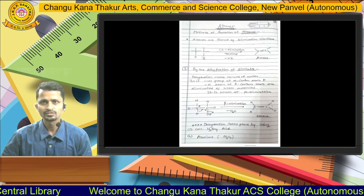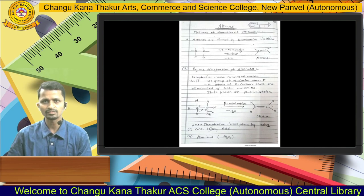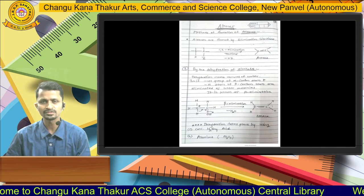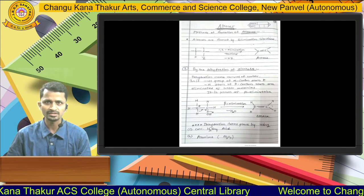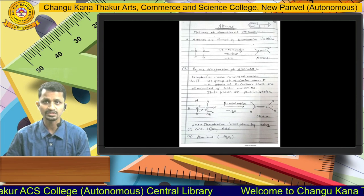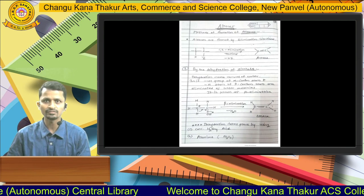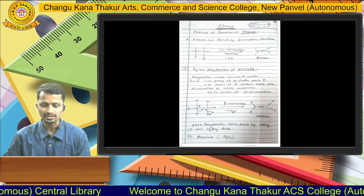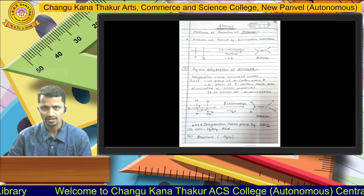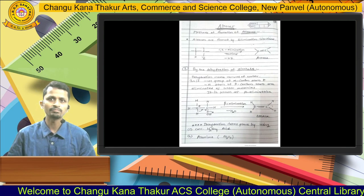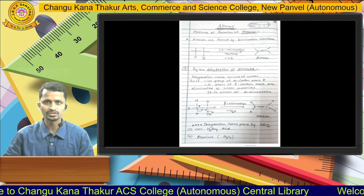Today we will learn the different methods of formation of alkenes. Alkenes are compounds containing a carbon-carbon double bond. There are different methods available for the formation and generation of alkenes. Alcohols are compounds containing OH groups in their structure.